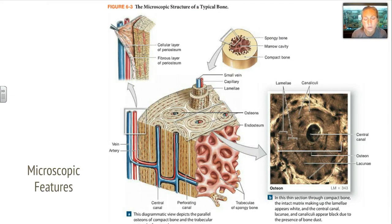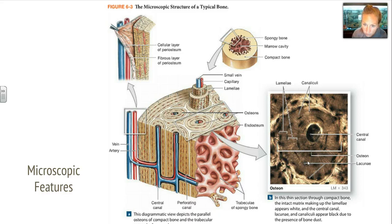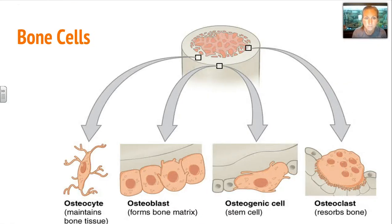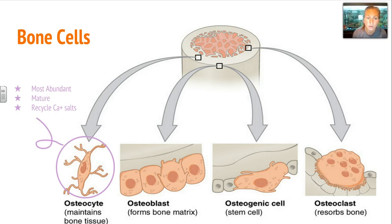Here's a closer look at microscopic features. Here's an osteon, which you've seen before when we talked about connective tissues. You have your lamellae — the concentric circles that have lacunae in between, those small pits that store the osteocytes or bone cells. There are three main types of bone cells. The osteocyte maintains bone tissue — it's the most abundant type, a very mature cell that recycles calcium salts to maintain bone tissue.